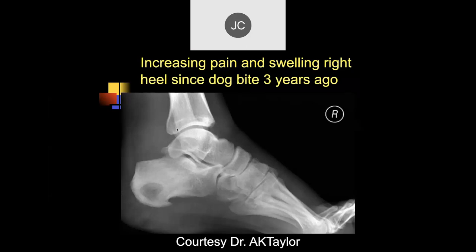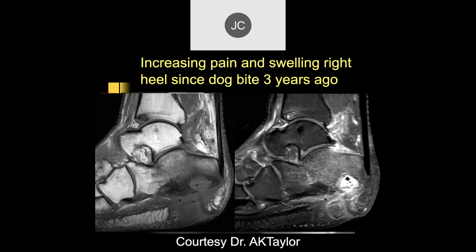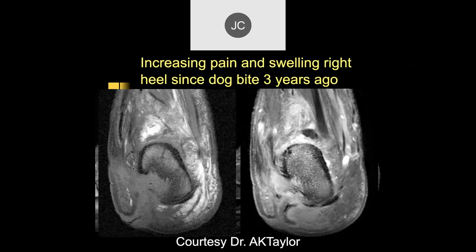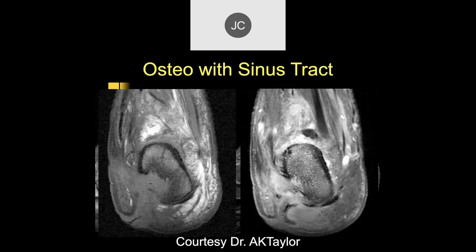Increasing pain in the right heel. There's a lucency in the posterior calcaneus with sclerotic margins, the fat pad looks a little dense, and there may be a little air in the soft tissue. On MRI, there's a lot of destruction of the inferior calcaneus, gas visible here from a draining sinus, and a big abscess within the bone with chronic eburnation due to chronic inflammatory reaction. The cortical destruction and draining sinus tract are clearly visible — this was osteomyelitis with a large sinus tract and abscess.